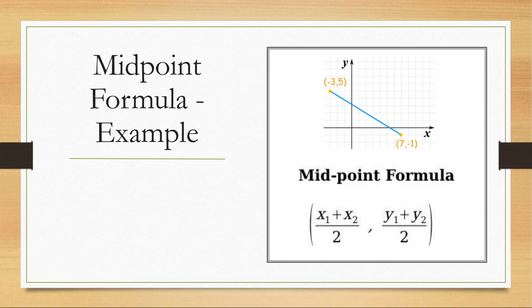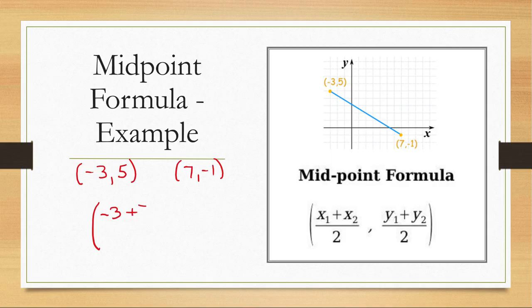So if I want to find the midpoint between (-3, 5) and (7, -1), the first thing I'm going to do is add my two x values together. Remember that the x values come first. So we have a -3 and we have a positive 7, and then we're going to divide that by 2. Next we're going to add our two y values together. So that's going to be the 5 and the -1.